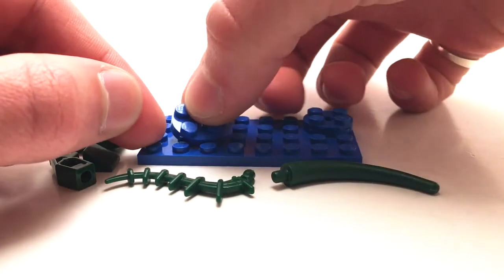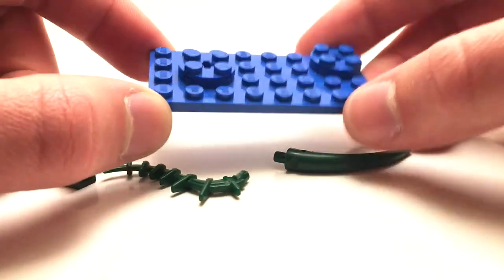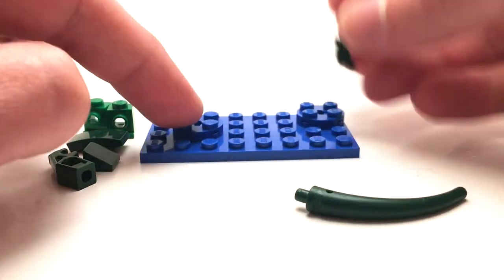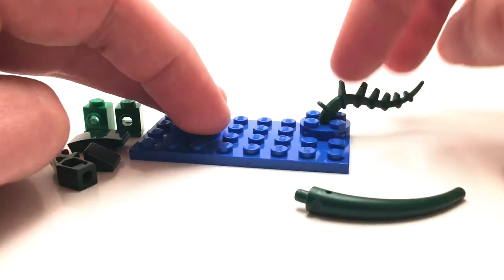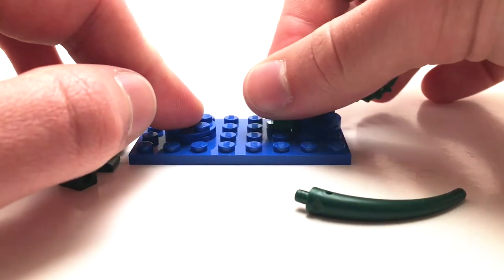Building this up, we first have the water which is just this four by eight plate with these two by twos. Then the end of the tail is this vine piece.